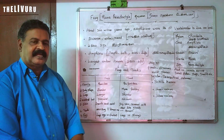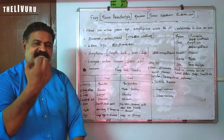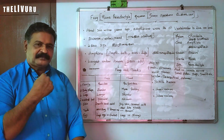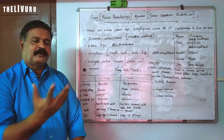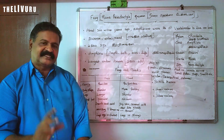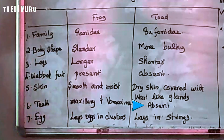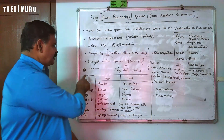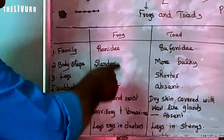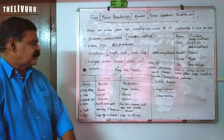Frogs have maxillary and vomerine teeth. The fingers are different between frogs and toads. These are the main differences between frogs and toads.